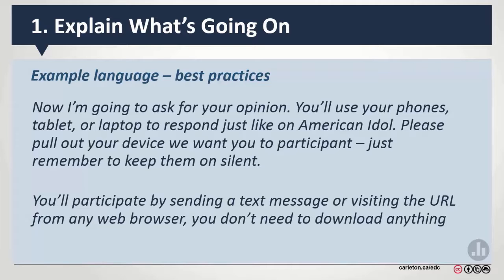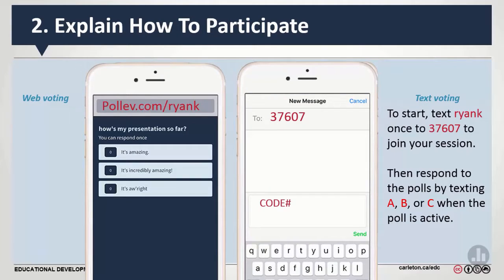We also have some standardized language that you can email out or put into your course outline. For web voting on a smartphone browser or laptop, students can answer directly, and on the right-hand side is texting — you text to a number. It's a Canadian number, so most people have unlimited texting plans, but if they don't, ideally they can use the web. Device saturation tends to be above 99% for students at Carleton University. If a student doesn't have access, they can borrow a laptop from the library.